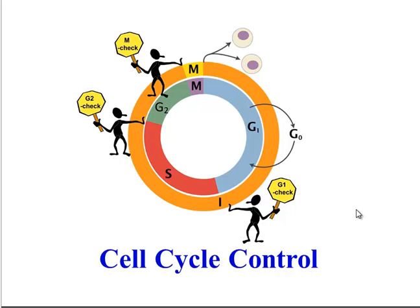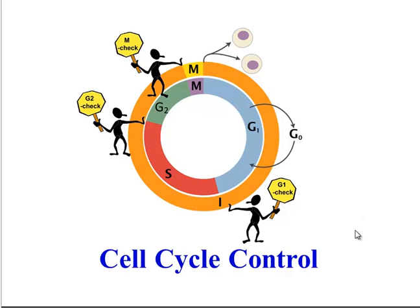So far in our development unit, we've learned that cells grow and divide when they enter the cell cycle and pass through a series of stages that culminates in the production of two identical cells. But we've also learned that not all cells divide at the same rate. Some cells never divide and they are stuck in G0; some divide really frequently. What determines whether a cell divides and when? This is up to the cell cycle control system, and that's what we're going to explore in this video.